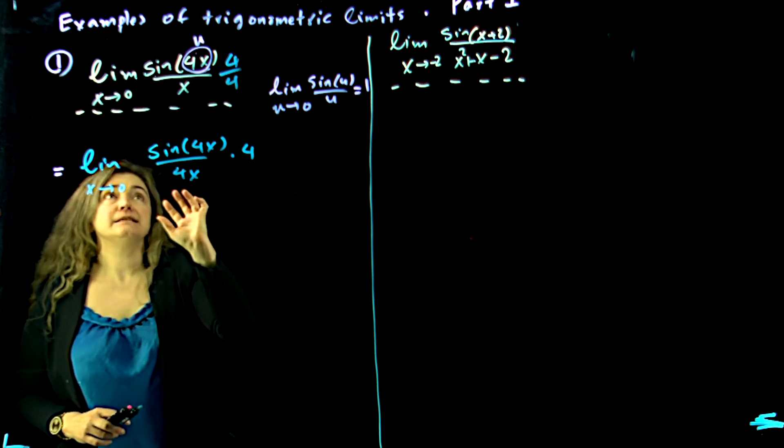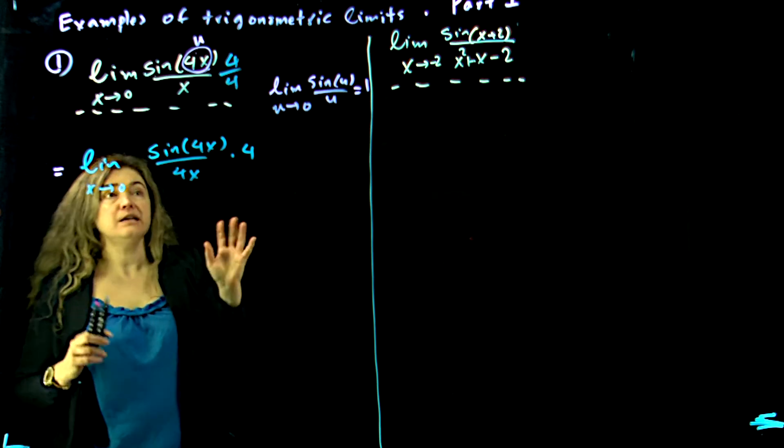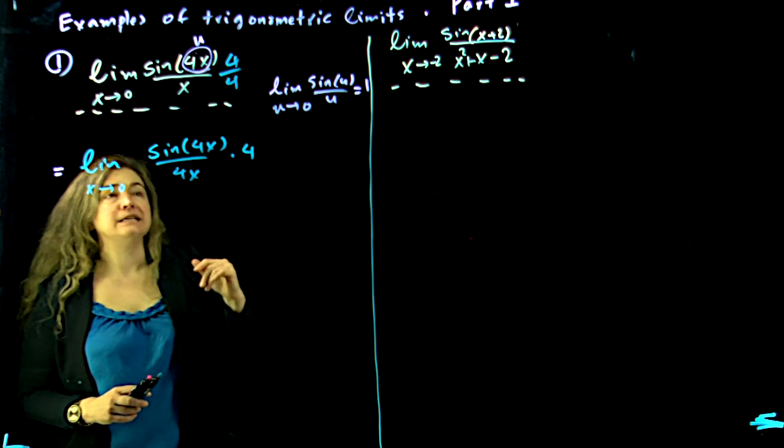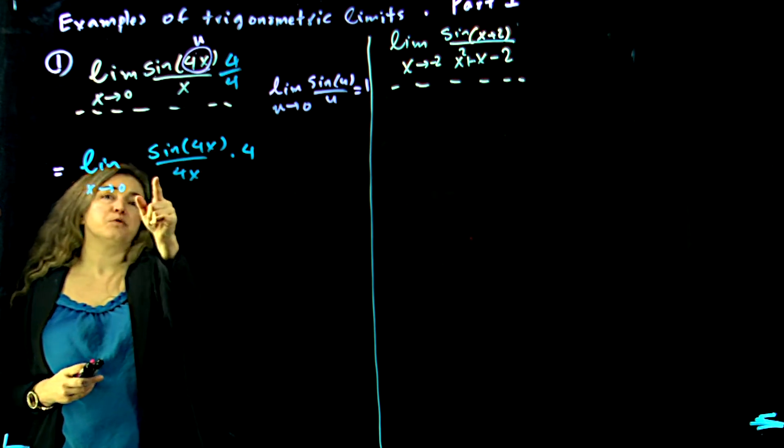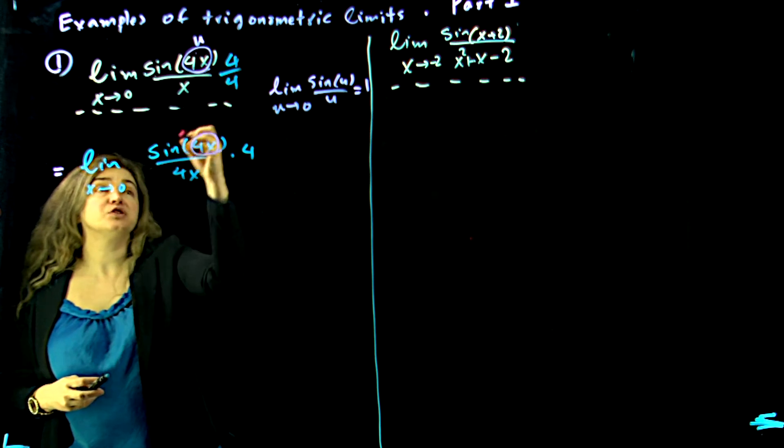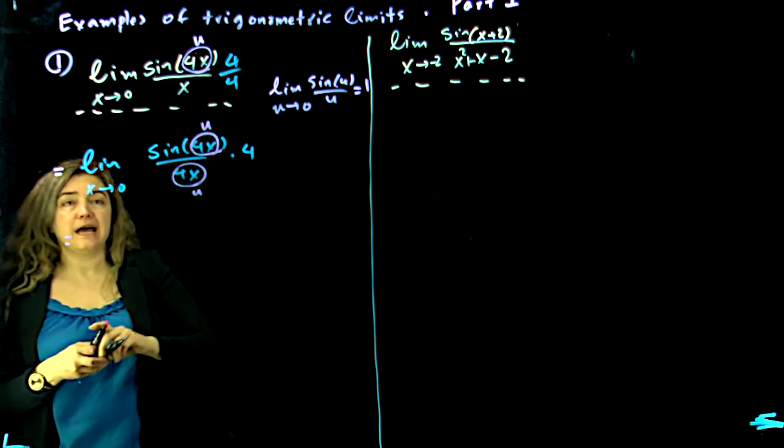Now this is the same as that in different disguises, right, but this satisfies what I need. Now what I have here is limit as x approaches 0, and I'm saying 4x is u. So I'm going to rewrite it that way.